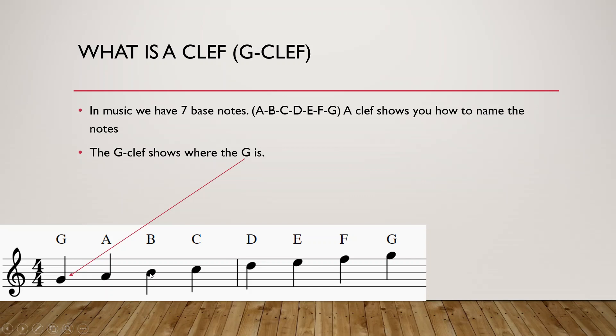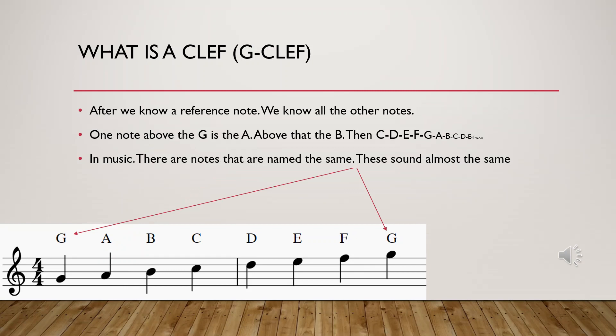One step above G — between the two lines — is an A, then B, C, D, E, F, G. Because after G comes A again. So below the G will be an F, an E and a D. You need to remember that the second line is a G when we are in a G clef. We have two G's but they sound really similar, and that's why they have the same name.